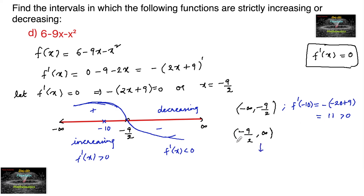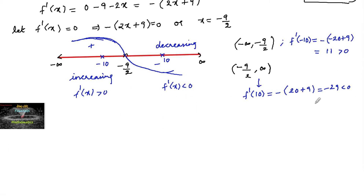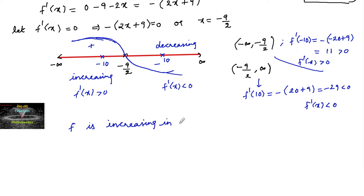Now let me consider a value on the other side. Let me take x = +10. f'(10) = minus of (2 × 10 + 9) = minus of (20 + 9) = -29, which is less than 0. So f'(x) < 0 on (-9/2, +∞). We can confirm that f'(x) is negative there and positive in the other interval. Therefore, the given function f is increasing in the interval minus infinity to -9/2 and decreasing in the interval -9/2 to infinity.